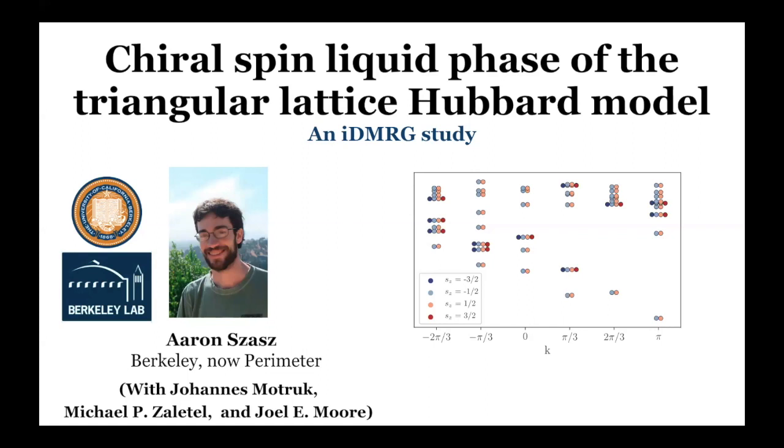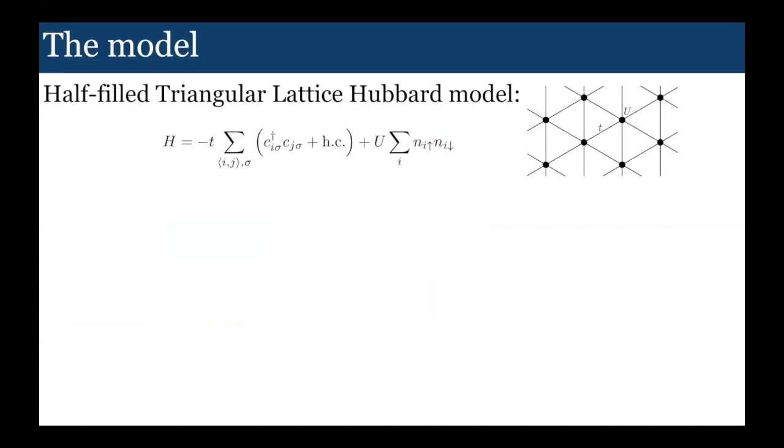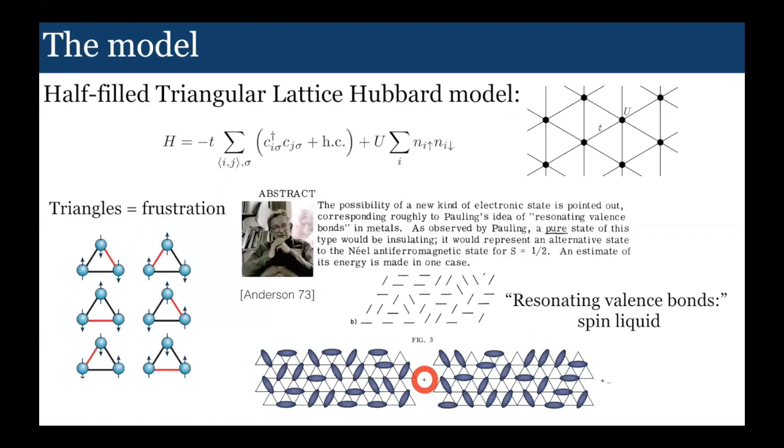I'm going to be telling you about an infinite density matrix renormalization group study of a model which needs very little introduction - it's just the half-filled triangular lattice Hubbard model. We're going to consider the isotropic triangular lattice with Hubbard interaction U. Of course, we're at half-filling, so if U is large enough, the system has magnetic fluctuations, or charge fluctuations, and we choose triangles because triangles lead to frustration.